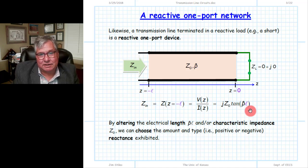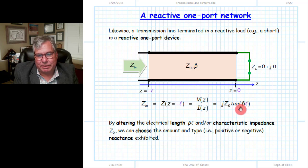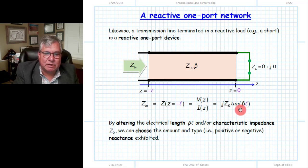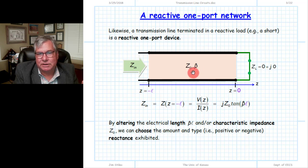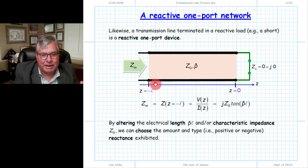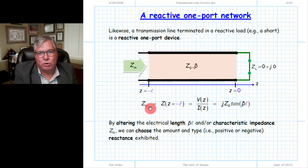This input impedance could be inductive — positive reactance — or capacitive — negative reactance — depending on the value of tangent beta L. Tangent could be a positive or a negative value, beta L being the electrical length of the line. We can adjust the reactance of this input impedance by changing either the characteristic impedance of the transmission line or the electrical length itself, the physical length multiplied by beta. By doing this, we can create a reactance which is the required reactance for a single one-port device.